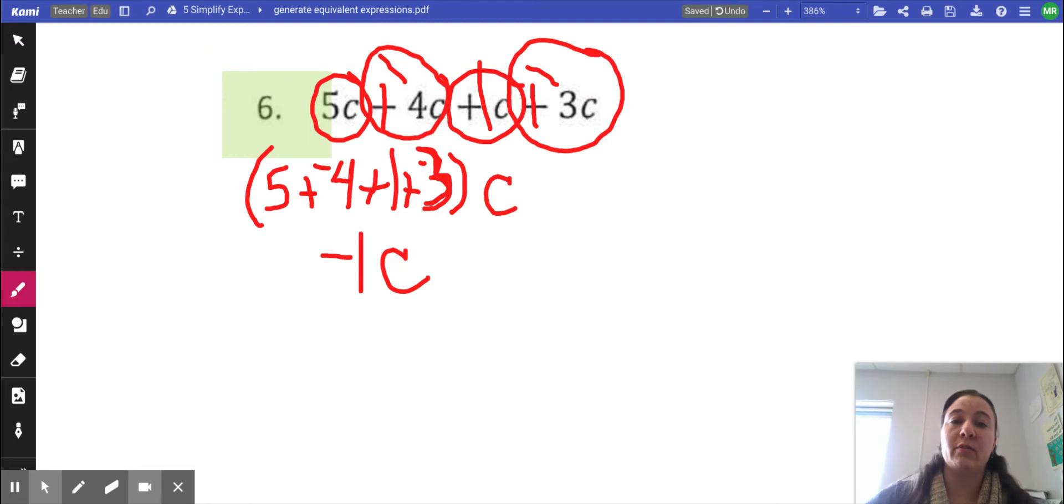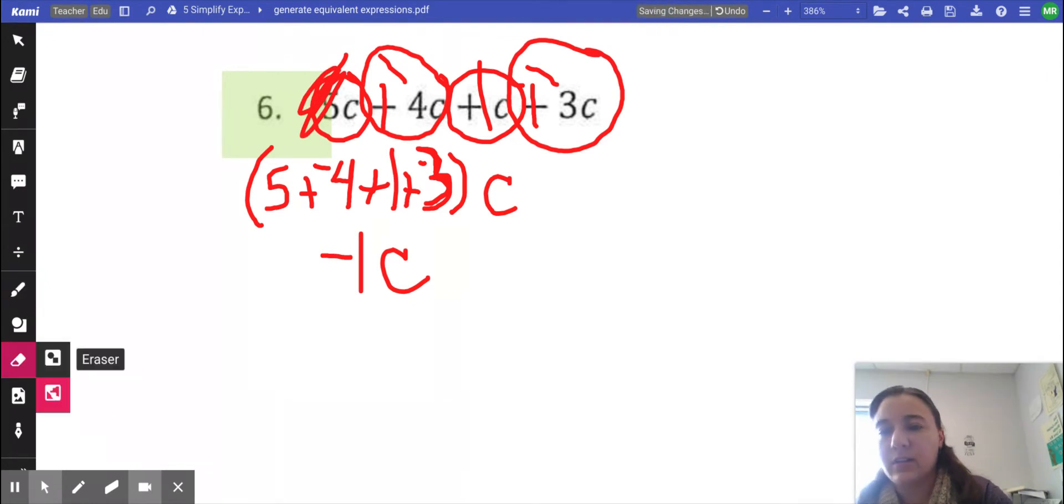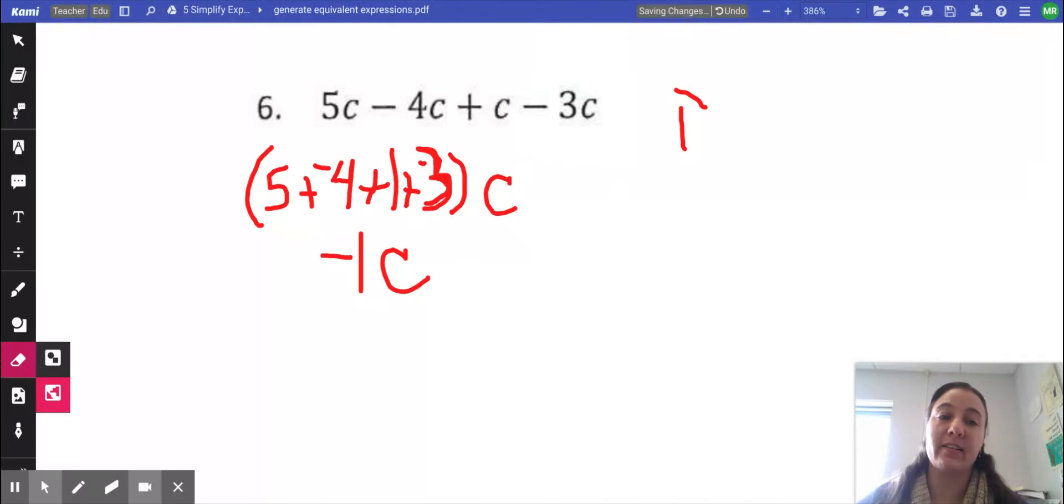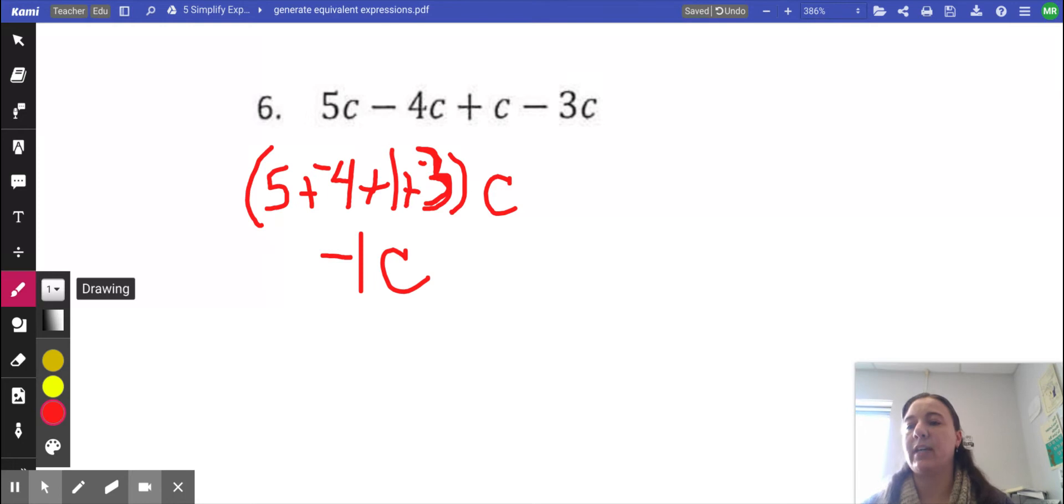Instead of using letters, I'm going to use things. So I got five cats. Take away four cats. Now you have one cat and I got another cat. I didn't say how many, but when I get a cat, it's just one. So five cats, take away four cats is one cat and another cat. Take away three cats. You owe me a cat. Why are you stealing my cats? You owe me a cat.